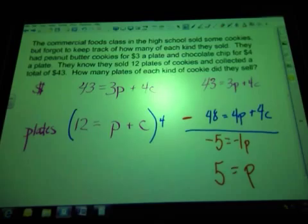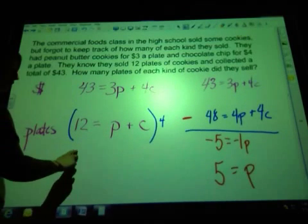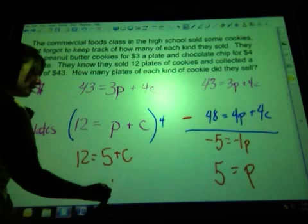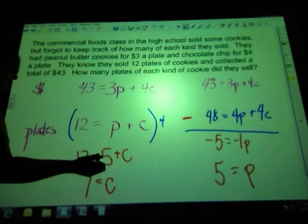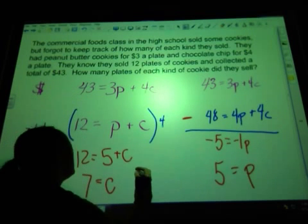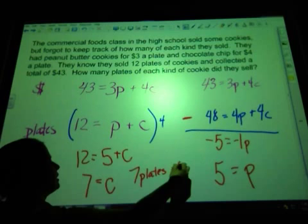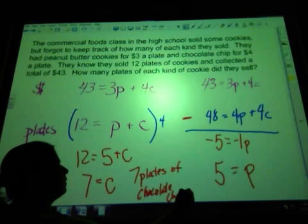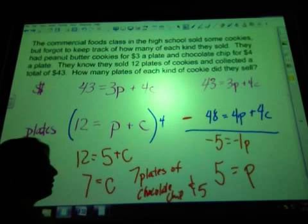Now I need to figure out how many plates of chocolate chip cookies they have. So I plug this 5 into one of my equations. This one just is less work. So I have 5 plus c. Well that means they had 7 plates of chocolate chip cookies. So you just need to write out your solution: 7 plates of chocolate chip and 5 plates of peanut butter.